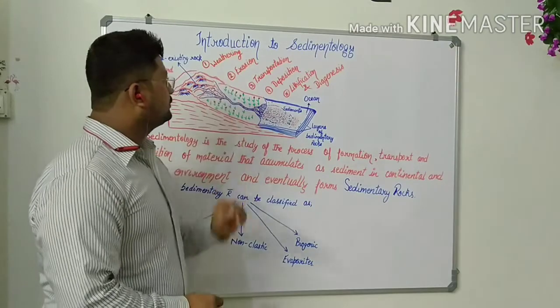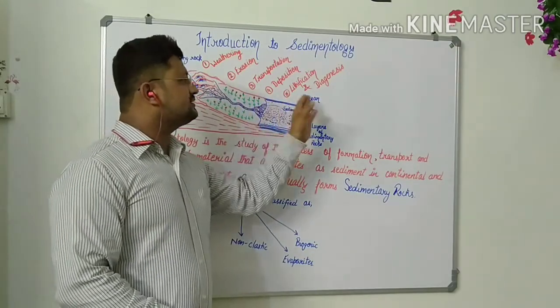So these five processes are extremely important: weathering, erosion, transport, deposition, lithification and diagenesis.